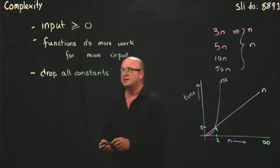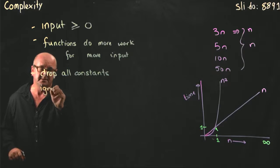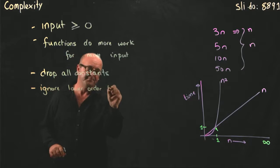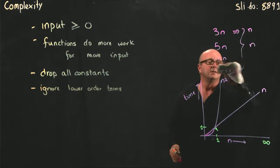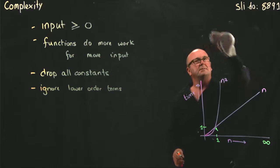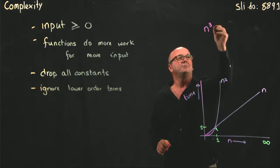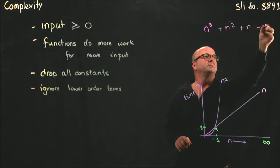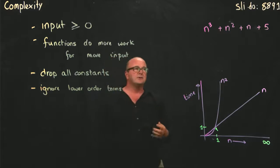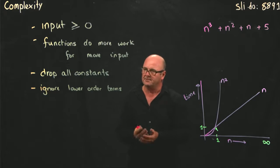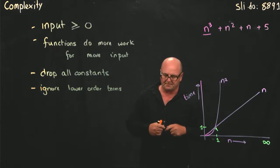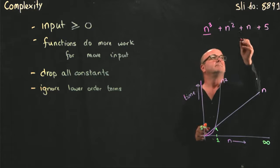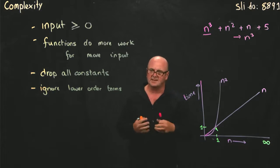As I mentioned on Tuesday, we ignore the lower order terms. If we have some function that involves different orders, for example, n cubed plus n squared plus n plus a constant, the n, the constant, and the n squared don't really contribute to the complexity of that algorithm. The only thing that's really important as n approaches infinity is the n cubed part. So we can just ignore lower order terms, and we say this basically is an n cubed algorithm.